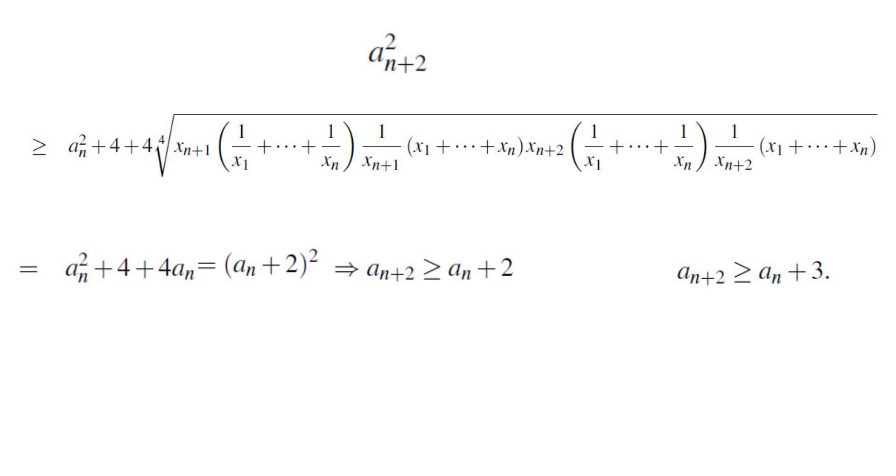So all we need to do is to apply this repeatedly to what they gave us. A2023 is at least A2021 plus 3 is at least A2019 plus 3 times 2, A2017 plus 3 times 3, A2015 plus 3 times 4, etc. And the last one becomes A1 plus 3 times 1011. And that's exactly 3034.